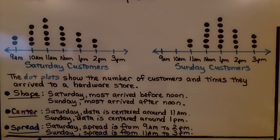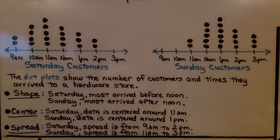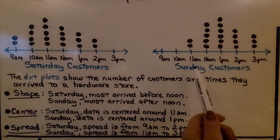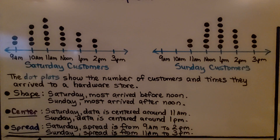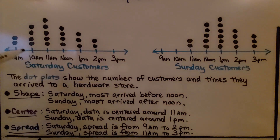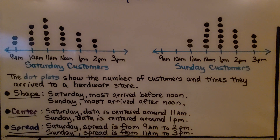For the spread on Saturday, the spread is from 9 a.m. to 2 p.m. For Sunday, the spread is from 11 a.m. to 3 p.m. We can look at these two dot plots and see visually the difference between them. See how this one is leaning — the data values are leaning more to the left. This one is leaning more to the right. We can visually see what's going on.